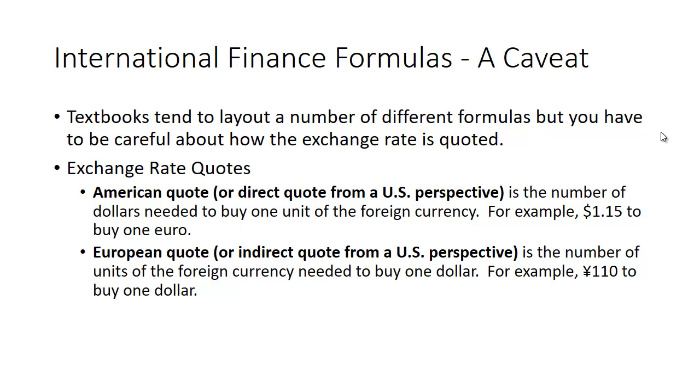Then there's the European quote, or what's known as the indirect quote from a U.S. perspective. We should keep in mind it has nothing to do with Europe, that's just the term they use. This is the number of units of the foreign currency needed to buy one dollar. For example, yen are generally quoted this way—110 yen to buy one dollar—because it takes so many yen to buy a dollar, you'd be quoting fractions of a penny, which doesn't make much sense.